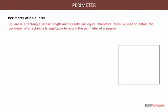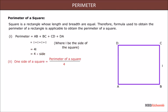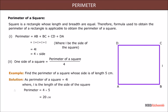Perimeter of a Square: A square is a rectangle whose length and breadth are equal. Therefore, the formula for the perimeter of a rectangle is applicable to find the perimeter of a square. Perimeter equals AB plus BC plus CD plus DA, which equals 4 times the side. One side of a square equals the perimeter divided by 4. For example, the perimeter of a square with side 5 centimeters equals 4 times 5, which is 20 centimeters.